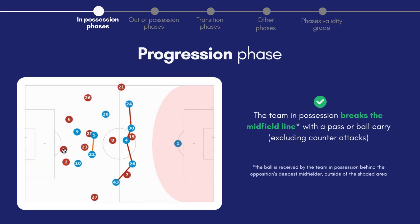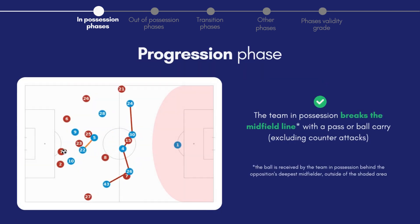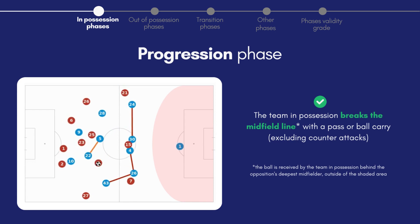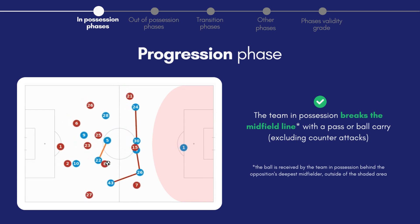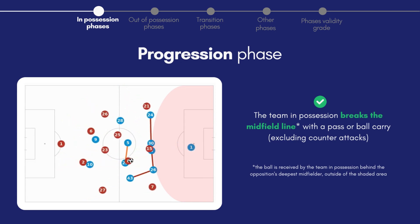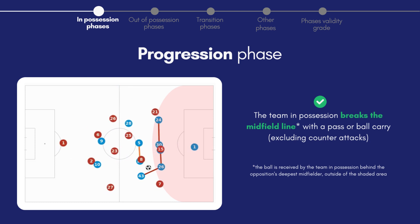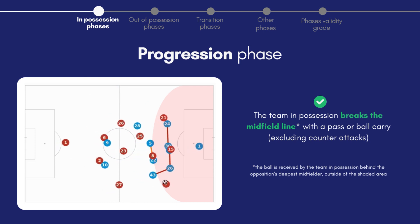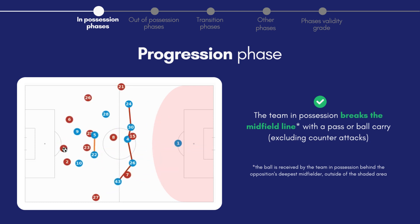Next we have progression, often called second phase build-up. This refers to moving the ball forward with a pass or carry that breaks the midfield line, situated within the first two thirds of the pitch.